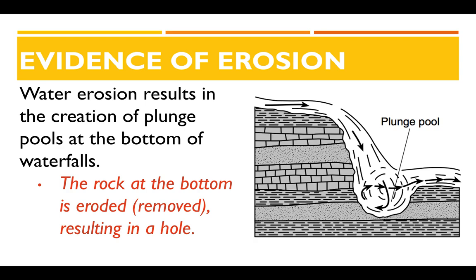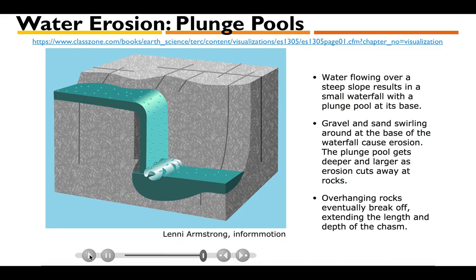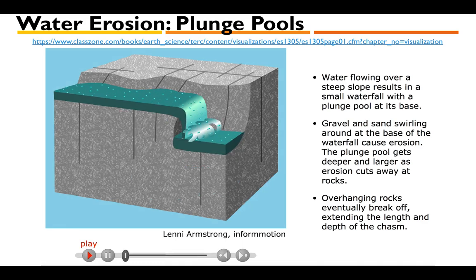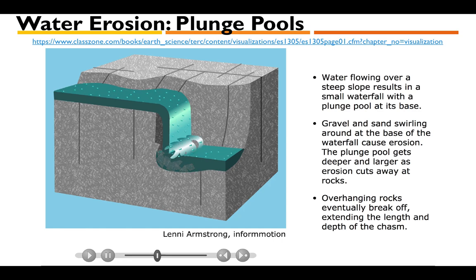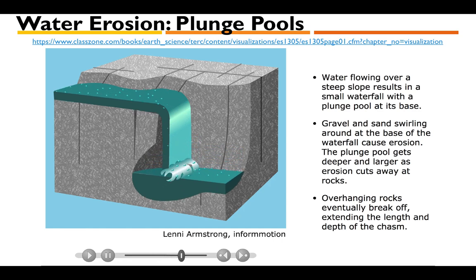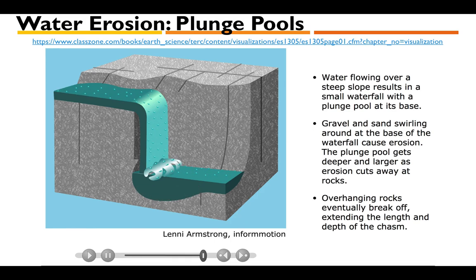Another piece of evidence of erosion can be seen in waterfalls. When all that water falls off a cliff and lands on rocks below, it has so much force it creates something called a plunge pool. As the water hits the rocks below with such strong force, it breaks the rock down over time, creating a hole. Watch this animation — as the water goes off the cliff, the rock at the bottom gets weaker from constant impact, causing the plunge pool to form.